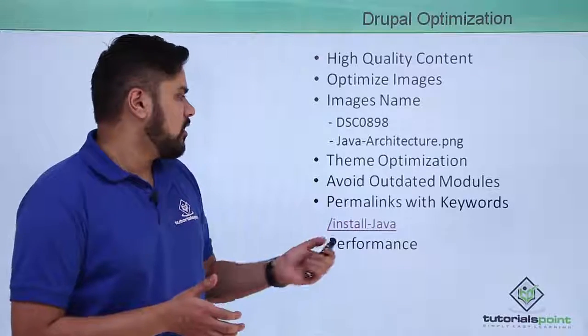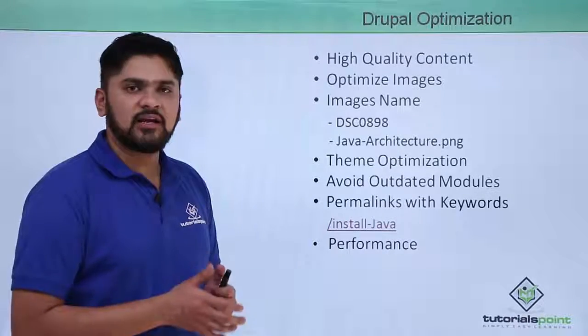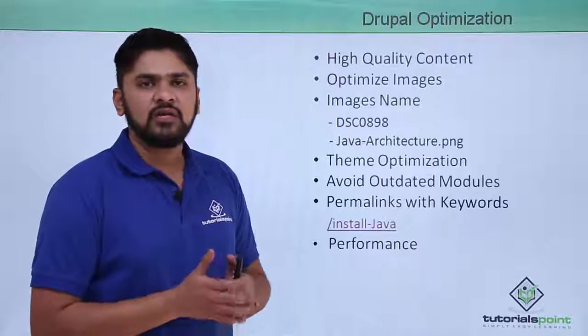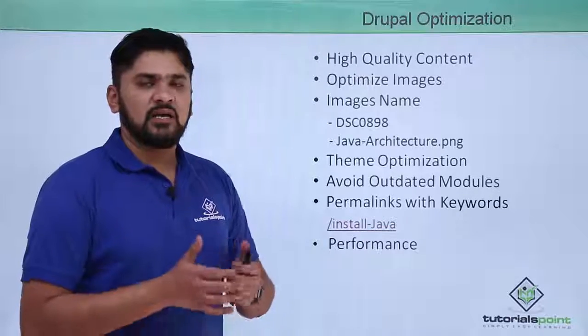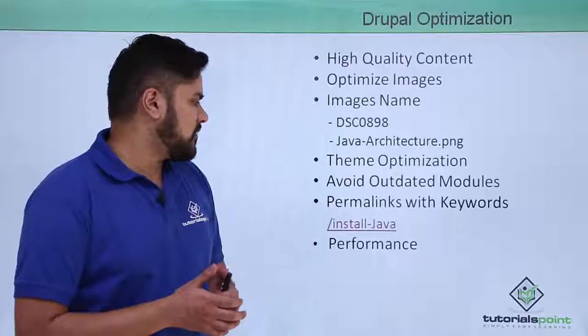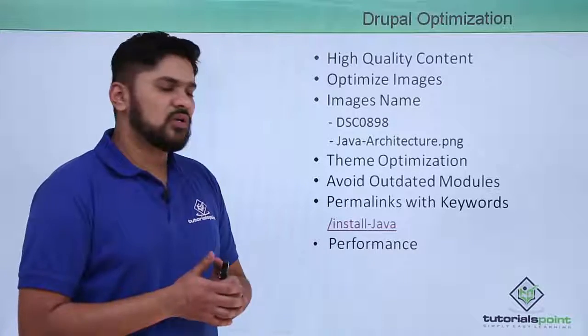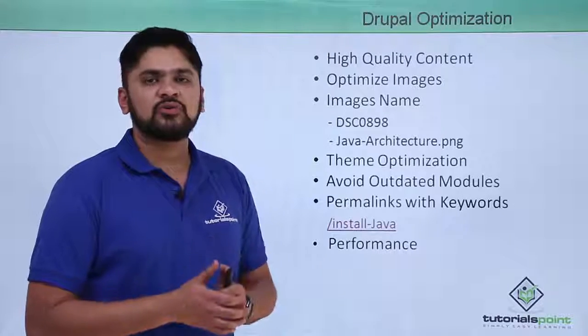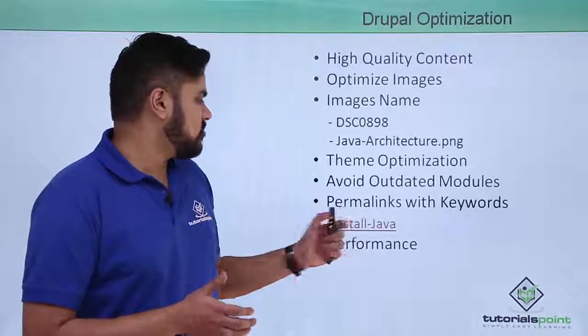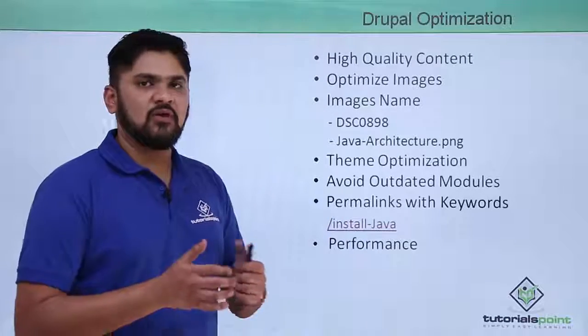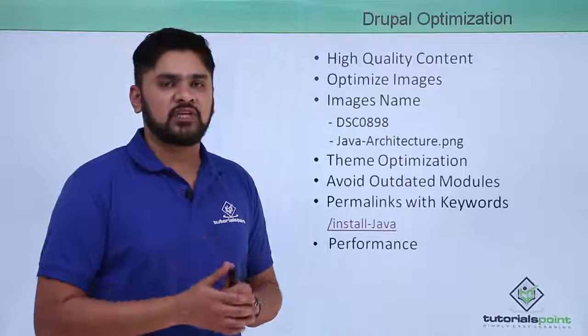The next one is permalinks with keywords. Always remember if you are creating an article it would be having a link also. That link should have keywords in it. If you remember we created Install Java, an article in which we installed Java. We have shown how to install Java as domain content. In that the link is install-java. So it's a good practice and always try to keep the link as short as possible.